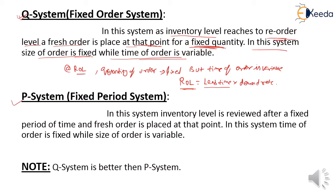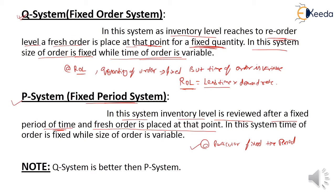What is a P system, or fixed periodic system? In this system, when the inventory level is reviewed after a fixed period of time, a fresh order is placed at that point. In the P system, a new order is placed at a particular fixed time period, but the quantity of order is variable while the time is fixed.